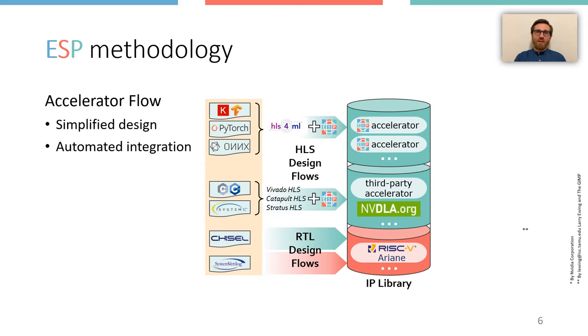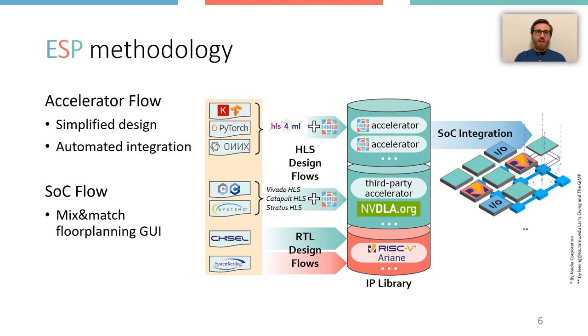All the accelerators generated with the ESP design flows become part of an IP library, which now can also contain third-party IPs like NVIDIA and Ariane. The designer can then use the ESP graphical user interface to select the number, mix and placement of tiles for a target SoC, as well as many other configuration parameters.